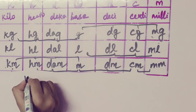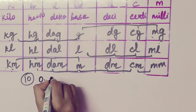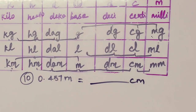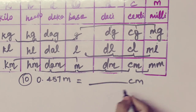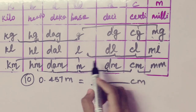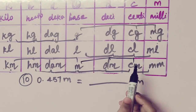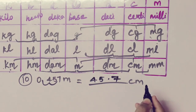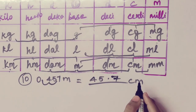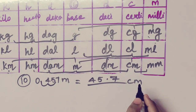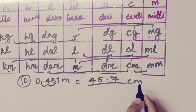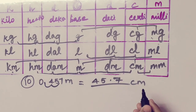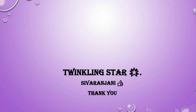Last sum, tenth sum: 0.457 meter equal to dash centimeter. Meter is here, centimeter is here — two times to the right side. Move the point two times: the answer is 45.7 centimeter. Unit conversion is easy. You can check the description, and please like, share and subscribe. Thank you, students.